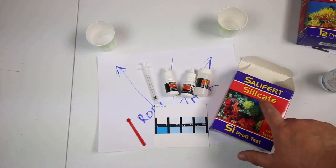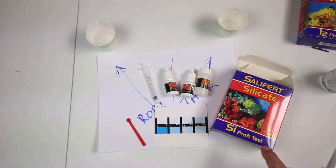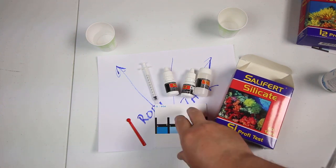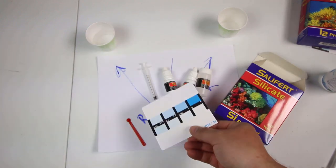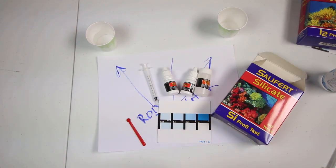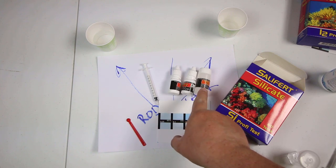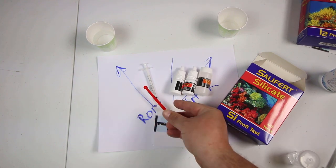Okay so first let's test for silicates. This is the Salifert test kit. Comes with 60 tests. Very simple to do. We have our little card reader with our color chart. We have our syringe, the little vial, and then we have SI1, SI2, and SI3 and our little scoop.